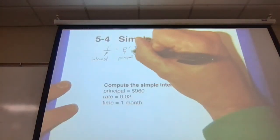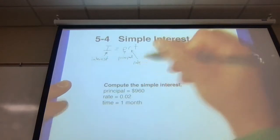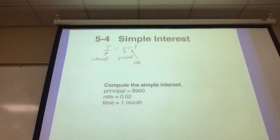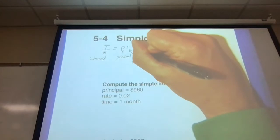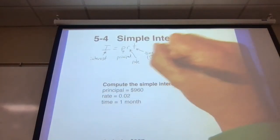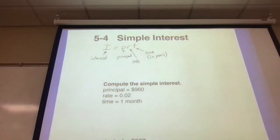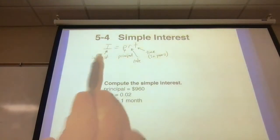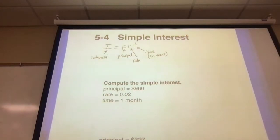R stands for rate. Rate is going to be the interest rate given to you as a percentage. And then T stands for time. The important thing with this time is it's time in years. So if they give you months, you're going to have to convert that to years. I'll show you how that works here in a second. So I equals PRT, that's your simple interest formula.